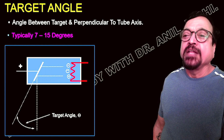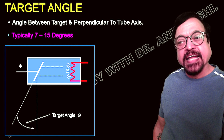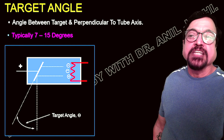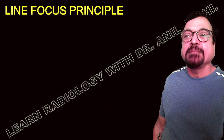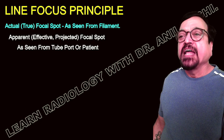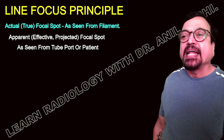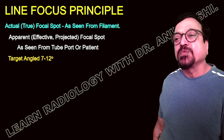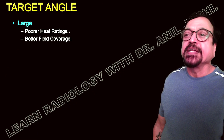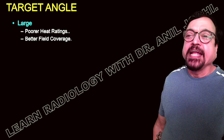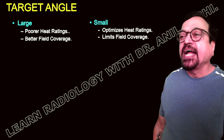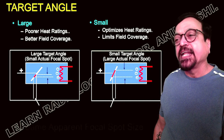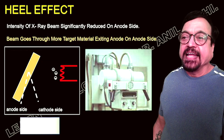The role of the target angle is to focus the x-rays in a particular direction. The electron flow is targeted from cathode to anode, and the anode converts it into x-ray photons. The angle — between 7 to 15 degrees depending on the machine and manufacturer — is essential for directing x-rays. The line focus principle distinguishes the actual (true) focal spot as seen from the filament, and the apparent (effective or projected) focal spot as seen from the tube port or patient. A larger target angle gives poorer heat rating but better field coverage; a smaller target angle optimizes heat rating but limits the field covered.